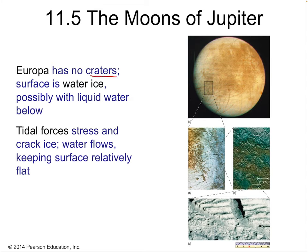Europa has no craters because its surface is water ice — not ammonia or methane ice — and it's constantly shifting. There's probably liquid water below, which explains an almost plate-tectonic style of huge shifting sheets of water ice. Tidal forces stress and crack the ice and probably keep the water above freezing. The subsurface ocean beneath the roughly one-kilometer-thick icy crust — maybe 10 to 20 km thick — is kept liquid by the same tidal energy that explains Io's volcanism. In fact, there may be more liquid water on Europa than on Earth, making it a good candidate for looking for life outside of Earth.